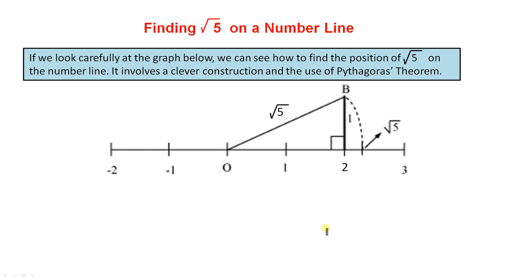Finding the square root of five on a number line. If we look carefully at the graph below, we can see how to find the position of the square root of five on the number line. It involves a clever construction and the use of Pythagoras' theorem. So we have a right angle triangle, the base is two units and the height is one unit. If we use Pythagoras' theorem, we find that that is the square root of five.